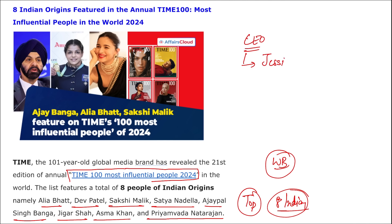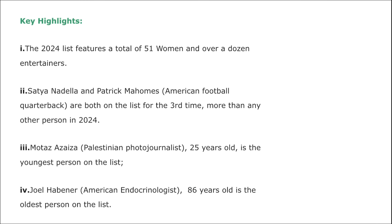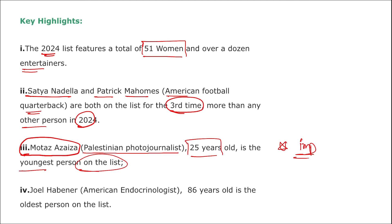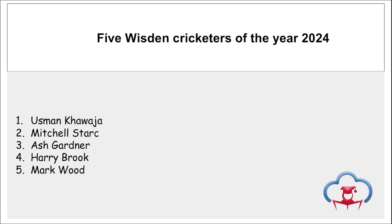Time Magazine's CEO is Jessica Sibley; headquartered in New York, USA, established in 1923. The 2024 list features 51 women and more than a dozen entertainers. Satya Nadella and Patrick Mahomes (American football quarterback) both appear on this list for the third time — more than any other person in 2024. Motaz Azaiza, a Palestinian photojournalist, is the youngest person on this list. Joel Habiner, an American endocrinologist aged 86, is the oldest person on this list.